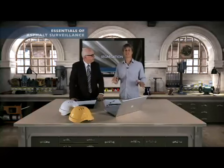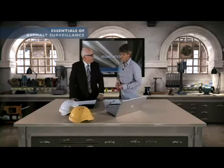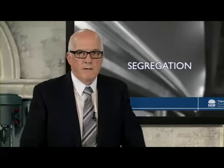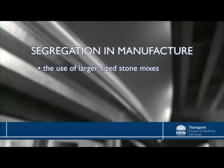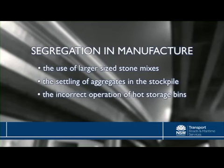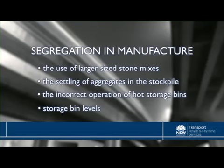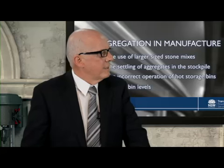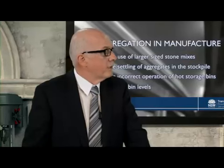Let's break them down, firstly into the manufacture process. Some of the causes of segregation are the use of larger sized stone mixes, segregation within aggregate stockpiles — which is usually due to the way the stockpile is created — incorrect operation of the hot storage bins, where it's better to discharge into the bin in large drops rather than a dribble. Asphalt storage bins should be kept to a minimum one-half to two-thirds full, because as things fall over distance, they naturally start to segregate into sizes. We need to be on the watch for it to minimise, or better still, avoid it altogether.